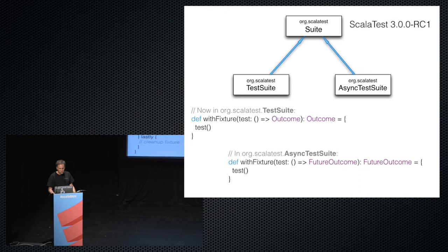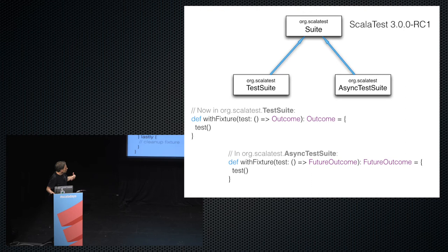The default implementation of this new withFixture is the same — it just invokes the test function. When you say super.withFixture(test), it invokes the test function and what comes back is a FutureOutcome.